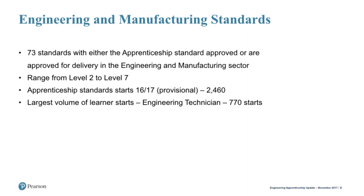Engineering sectors that have apprenticeship standards include rail, nuclear, utilities, engineering design and draftspersons, and other cross-sector roles including engineering construction. Work is commencing with the Institute for Apprenticeships to rationalise occupations and standards, to see where employer groups can work together to develop additional cross-sector occupations, or where similar occupations in terms of delivery and assessment can be merged into a single standard with a core and options approach.